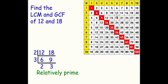So 2 and 3 are relatively prime since they have no common factors other than 1. Also, 2 and 3 are actually prime numbers. Our GCF is 2 times 3, which is 6. And our LCM, remember, we always have to multiply.